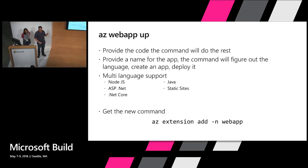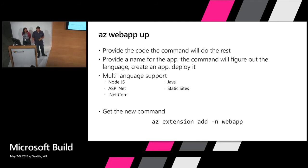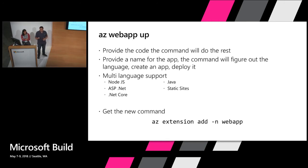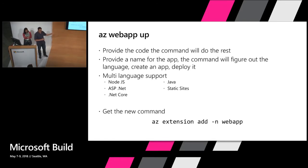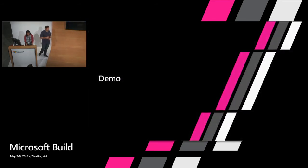So what we're introducing is `az webapp up` — one command. You give us your code and basically we'll do the rest. We'll figure out what's the language. Right now we're showing Node, but we have other languages: Node.js, ASP.NET, .NET Core, Java, static sites. We're bringing that also to PHP and almost every language that App Service supports. Even multi-containers and containers. The command is easily available from Azure CLI extensions using that command. A demo would actually be better, so handing it over to Sisera.